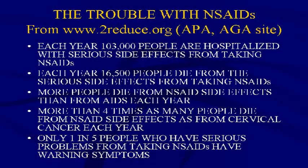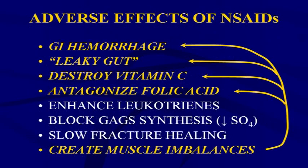Only one in five people who develop serious problems from taking NSAIDs have warning symptoms before they're hospitalized. Four adverse effects of NSAIDs create muscle imbalances: GI hemorrhage causes irritation of the gastrointestinal system, producing weakness of the pectoralis clavicular, quadriceps, and abdominals, possibly down to the tensor fasciae latae. Leaky gut — especially in the small intestine — similarly produces quadriceps and abdominal muscle weakness.